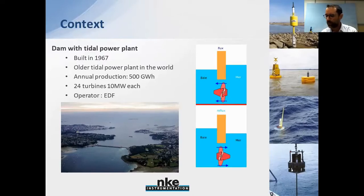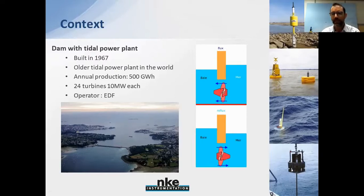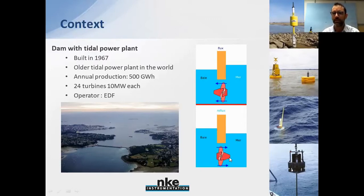On the picture you can see the dam — there is a road on top for cars, so it also functions as a route. On the right of the slide you can see the system: when the tide comes in, the machines turn one way, and when the tide goes out they turn the other way, producing electricity continuously throughout the day.